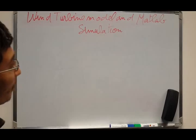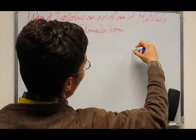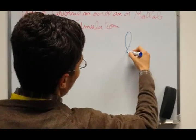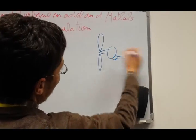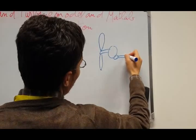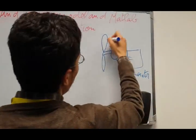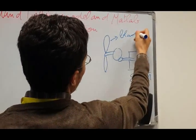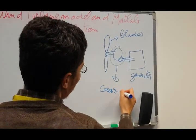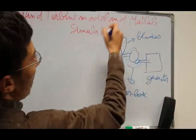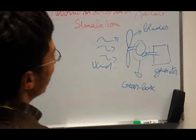Starting by defining the components of the wind turbine: this is the blade, and then we have here a gearbox. This gearbox is coupled into the generator. So here is the generator, here is the blade, the gearbox, and here we have the wind source.